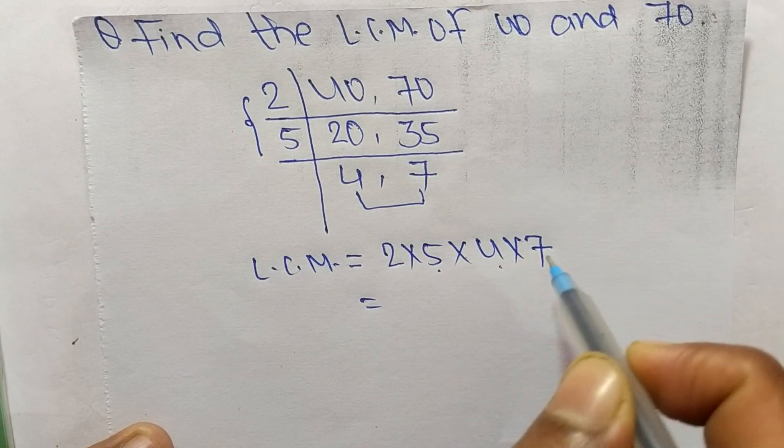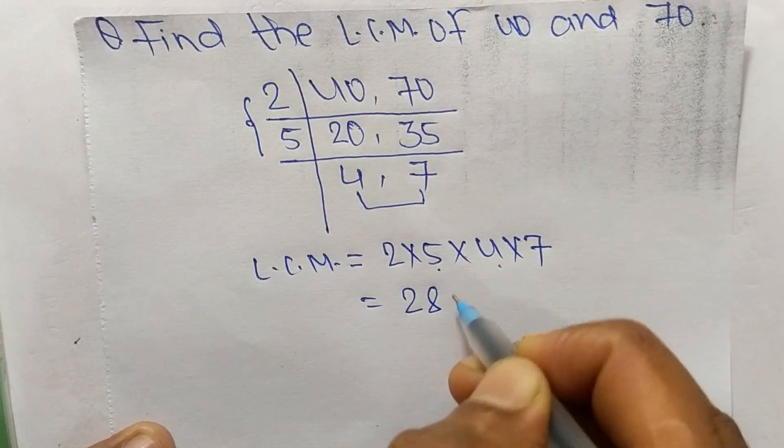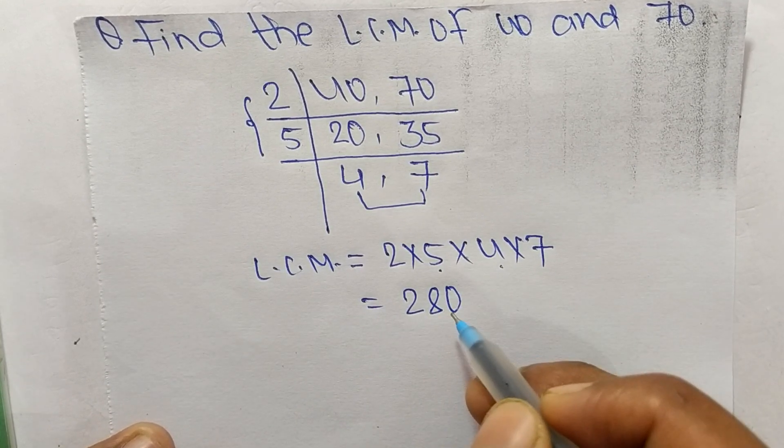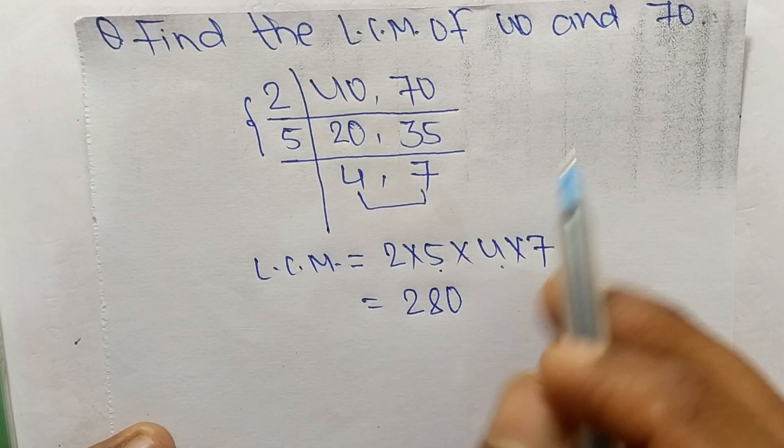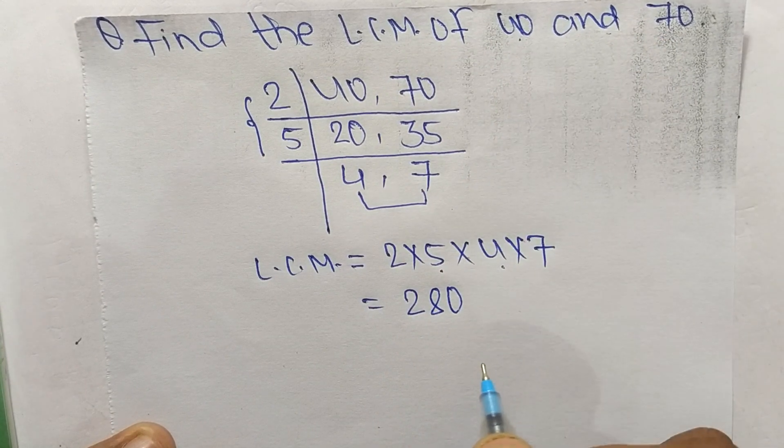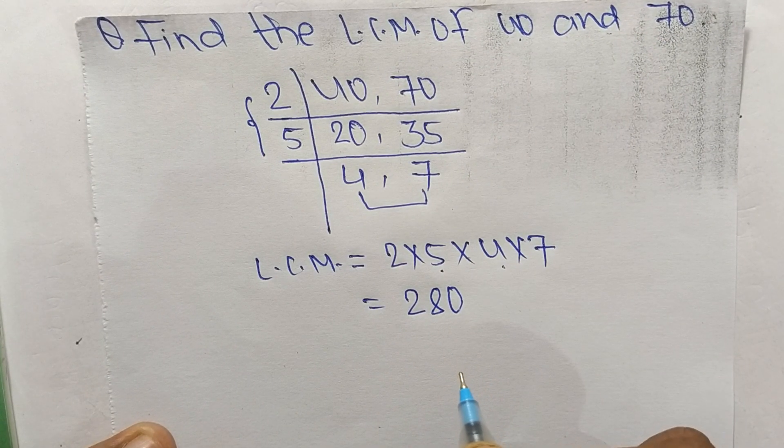40 times 7 equals 280. So 280 is the LCM of 40 and 70. So this much for today and thanks for watching.